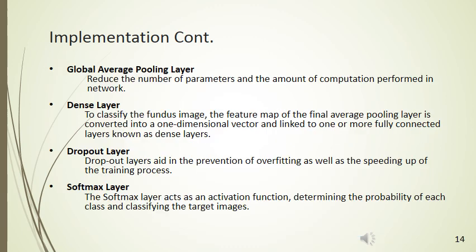The reasons for considering each layer in this experiment are: the global average pooling layer reduces the number of parameters and computation in the network; the dense layer is used to classify the fundus images; the dropout layer prevents overfitting and speeds up the training process; and the softmax layer acts as an activation function, determining the probability of each class and classifying the target images.